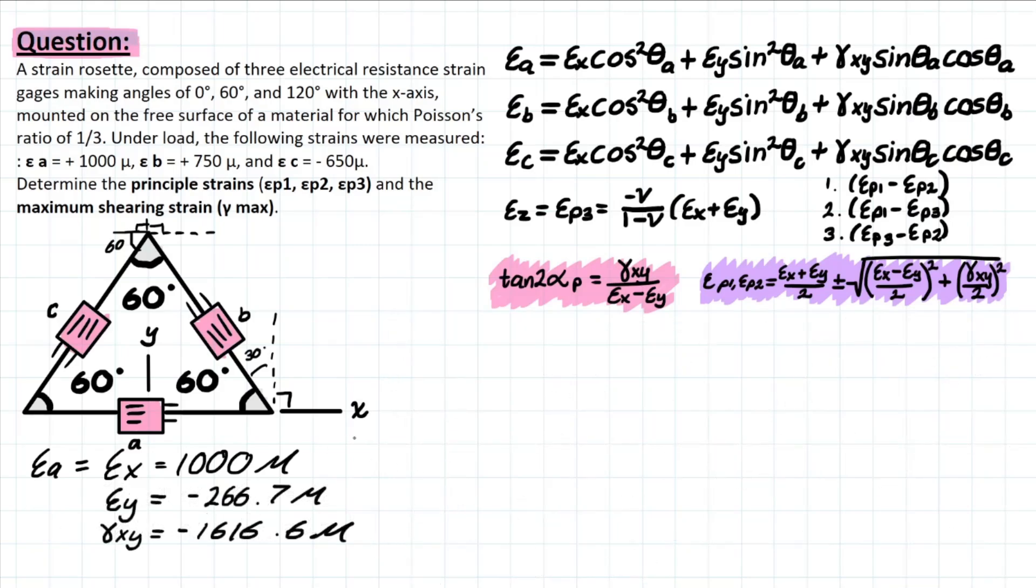All right, so now we're cleaned up here a little bit and we have epsilon_x, epsilon_y, and the shearing strain xy all solved for, which means we can finally proceed with our principal strain calculations for plane p1, p2, and then also p3.